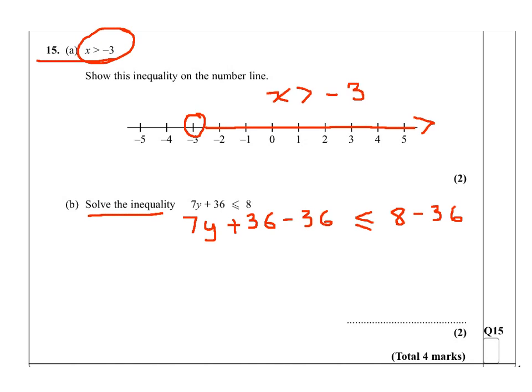I will treat this less or equal sign as an equal sign, so I will use the method of solving simple equations. Plus 36 minus 36 is 0. So I will have 7y less or equal to 8 minus 36, which is minus 28.